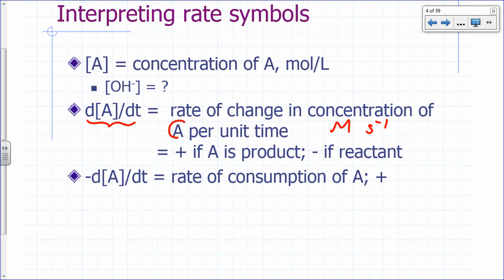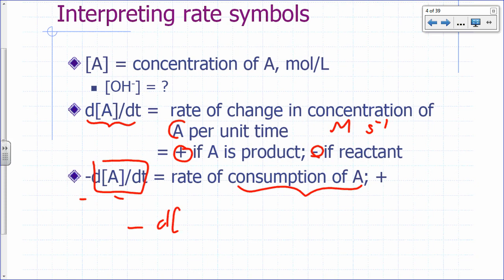If as time advances you're making more A — A is a product — then this derivative is positive. That derivative is going to be negative if A is decreasing as time advances. So if you want to express rates as just positive numbers and you're dealing with a reactant consuming A, then dA/dt is going to be negative. If you put a negative in front of the derivative of the concentration of the reactant with respect to time, that would be a positive number — the rate of consumption of A.